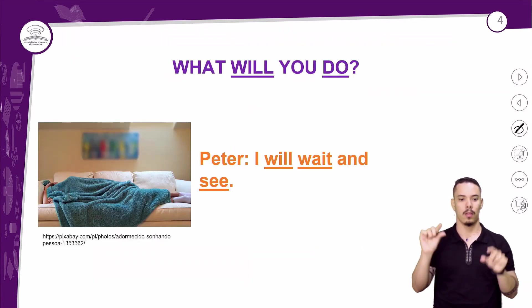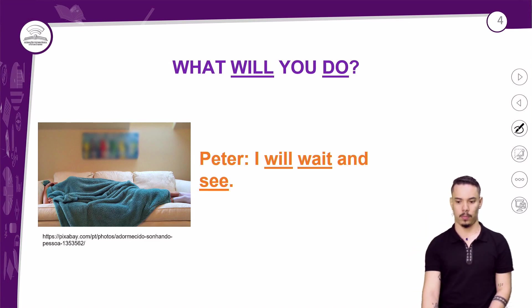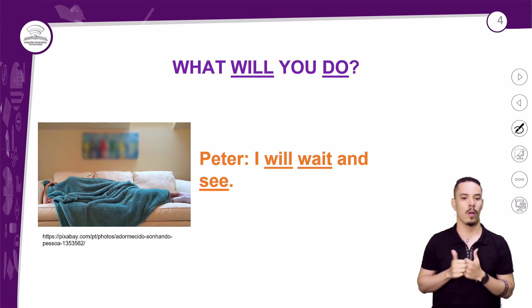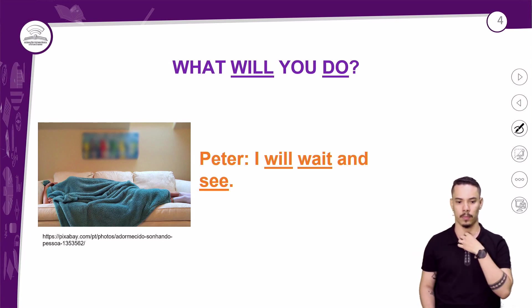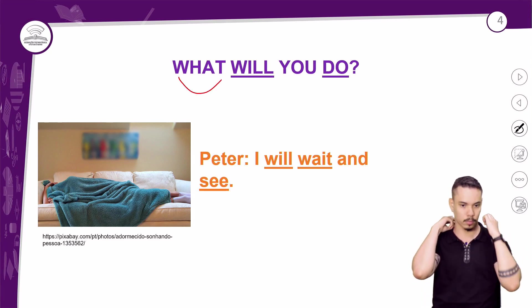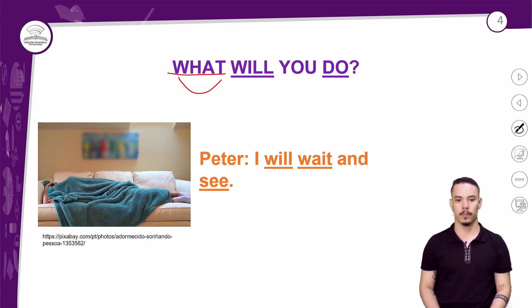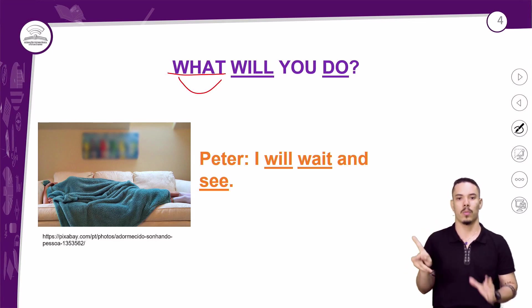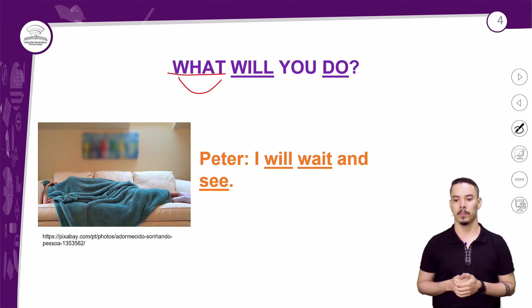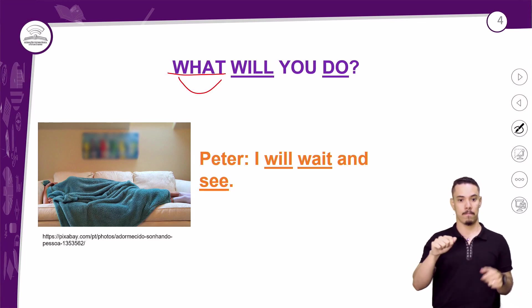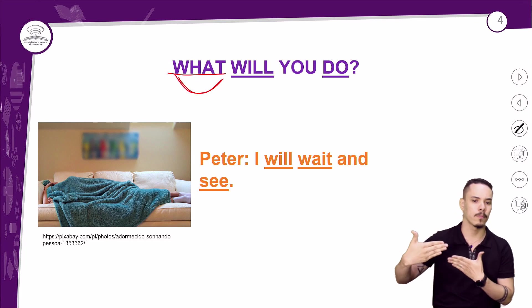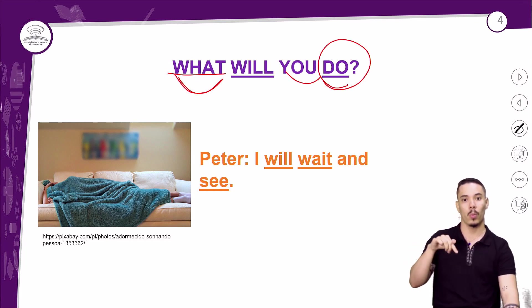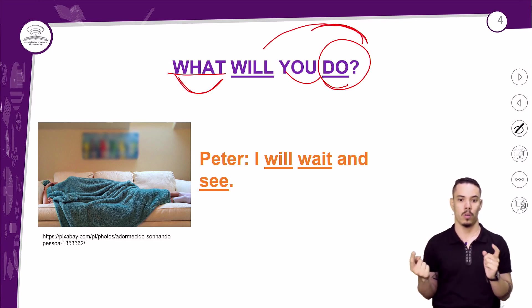Let's see several sentences with this future. We have the question: 'What will you do?' — O que você fará? We have the interrogative pronoun 'what,' which works as an interrogative pronoun. And Peter replies: 'I will wait and see' — Eu esperarei e verei. So the translation of the future with 'will' is like: eu falarei, eu comerei, você trabalhará.